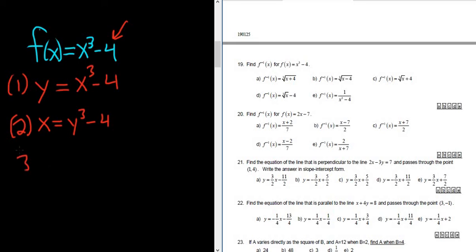And the third step is to solve for y. So to solve for y, we have to get the y cubed by itself first. So we'll start by adding 4 to both sides. So plus 4, plus 4. So these cancel. So we get x plus 4 equals y cubed.